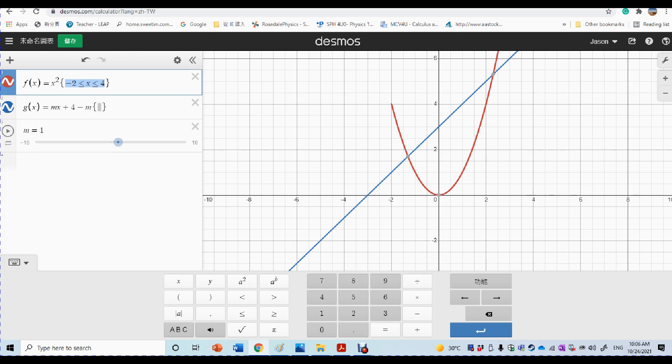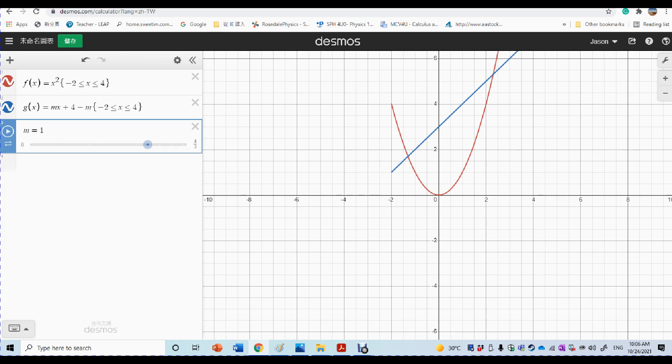And our next function is Gx equals Mx plus 4 minus M. So we need a slider of M, so we just create a slider of M. First of all, we restrict the domain of x again. Let me just copy this one. Restrict the domain the same way. And also for M, there's a restriction as well. It must be from 0 to 4 over 3.